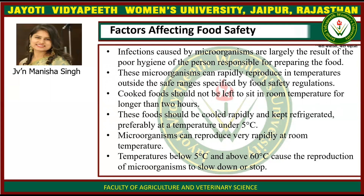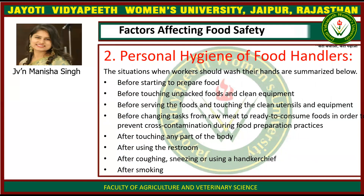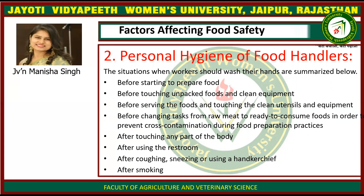Microorganisms can reproduce very rapidly at room temperature, and temperatures below 5 degrees Celsius and above 60 degrees Celsius cause the reproduction of microorganisms to slow down or stop. The second factor affecting food safety is the personal hygiene of food handlers.